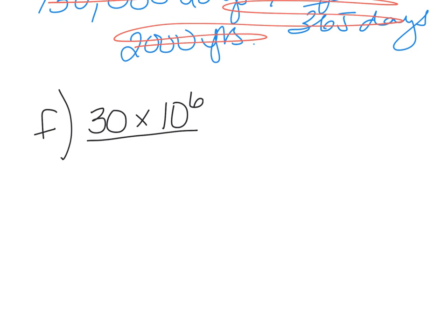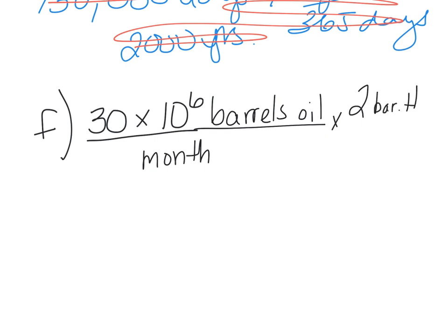And this is, again, you got to put your units in. So this is barrels of oil. Don't just put barrels because we have to use barrels of water later. Because here we have two barrels—I'm just going to abbreviate it—of water per one barrel of oil. Alright, so now my barrels of oil cancel and I'm going to get barrels of water per month.